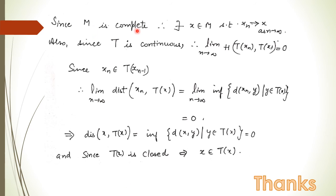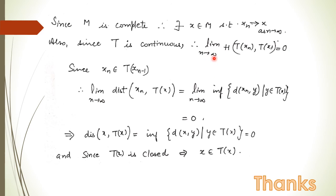Since m is complete, xₙ must converge in m — say it converges to x. Since T is continuous, d(xₙ, x) → 0 implies H(T(xₙ), T(x)) ≤ k·d(xₙ, x) → 0 as n → ∞, so H(T(xₙ), T(x)) → 0.